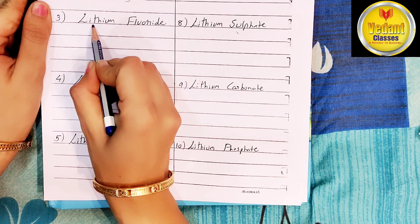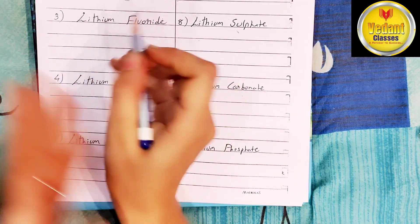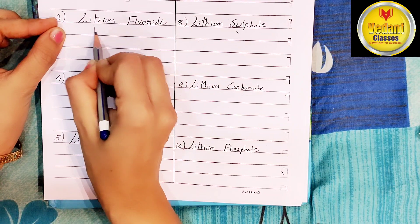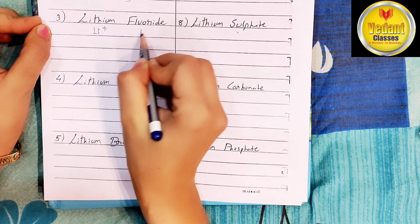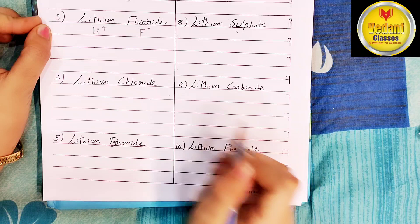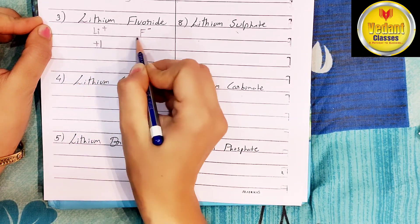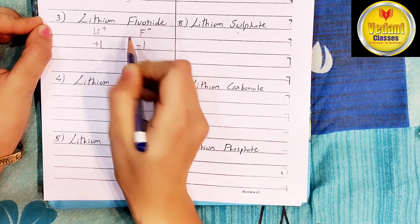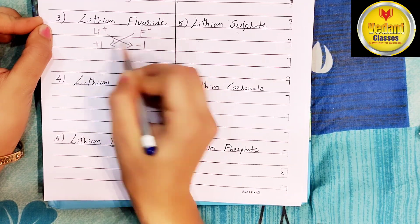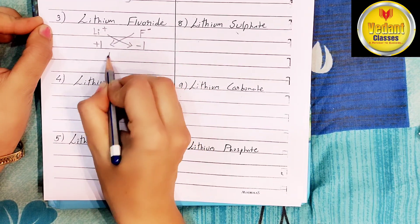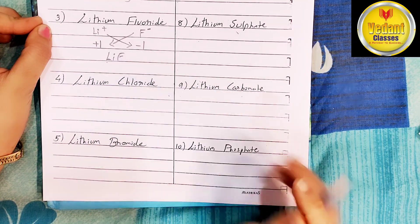Another compound is lithium fluoride. Lithium ion is written as Li+, fluoride ion is written as F-. Valency of lithium ion is plus 1, fluoride ion is minus 1. Now cross the valency. Compound will be LiF — lithium fluoride.